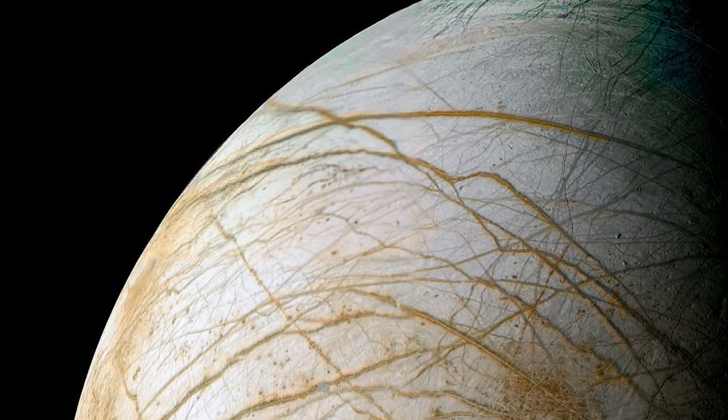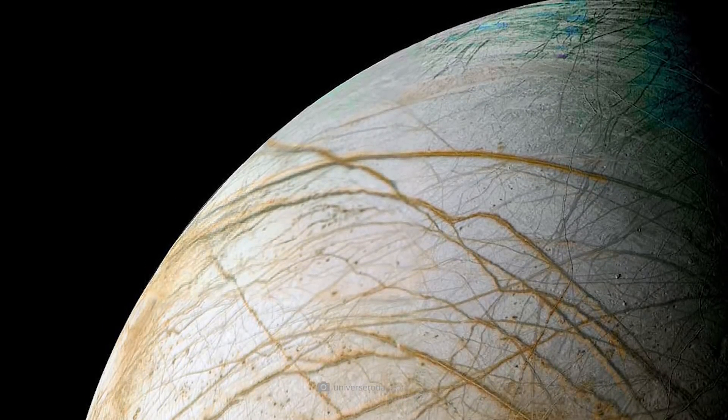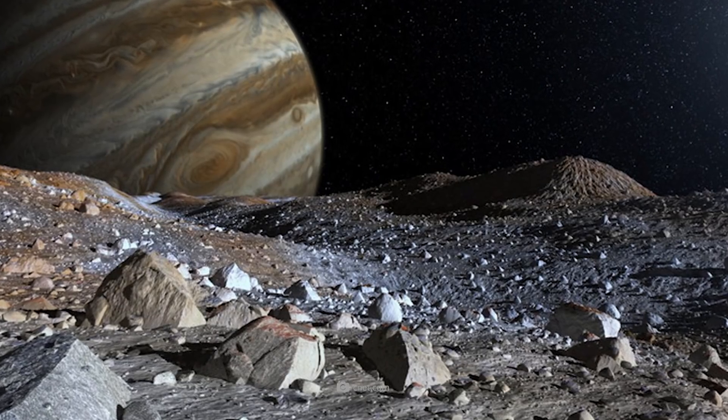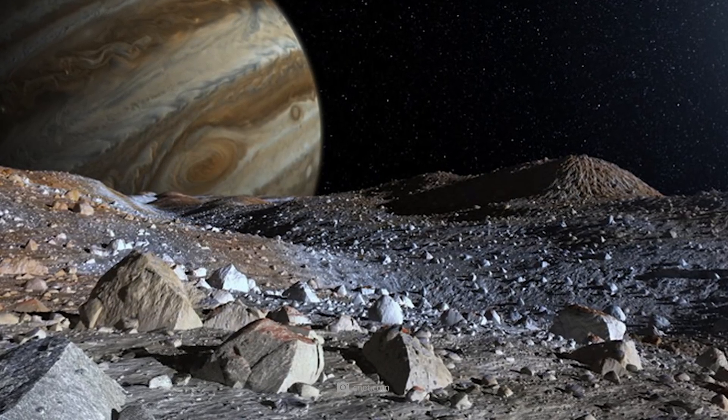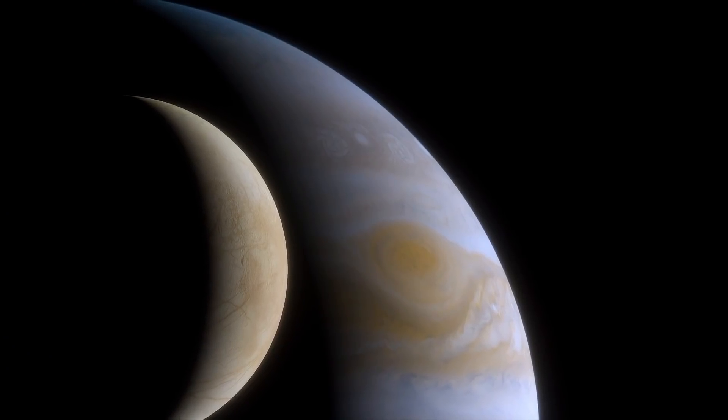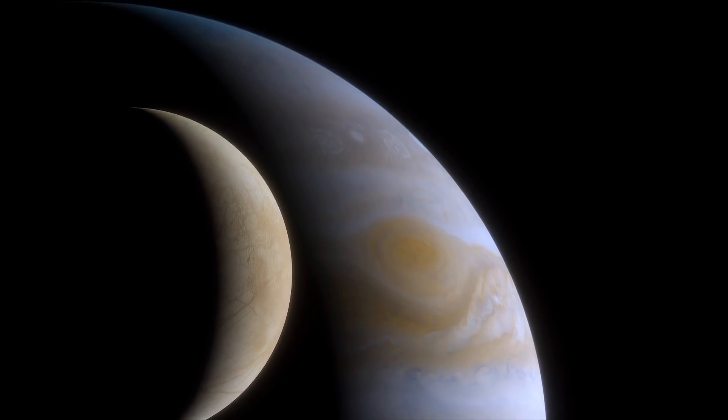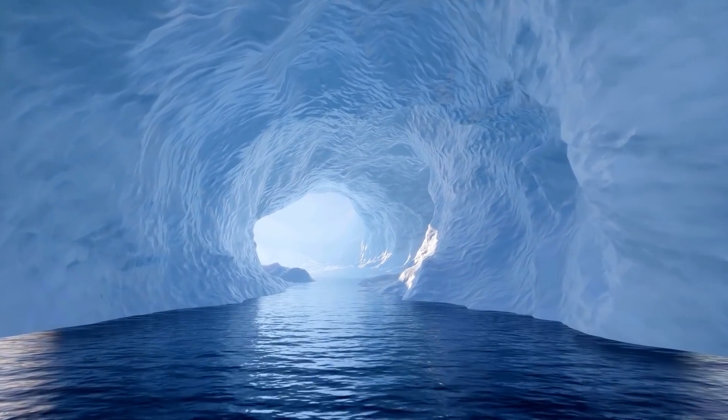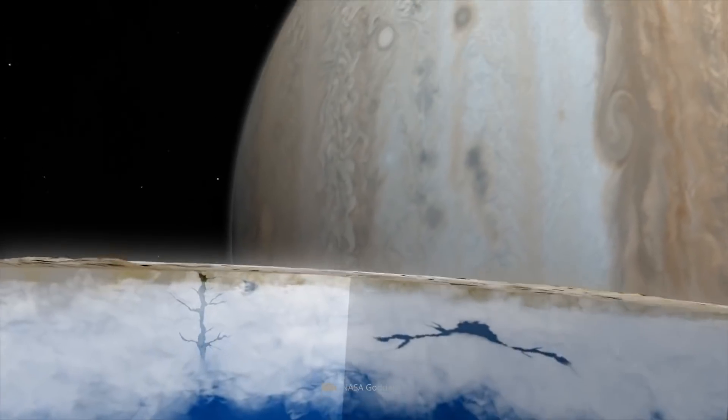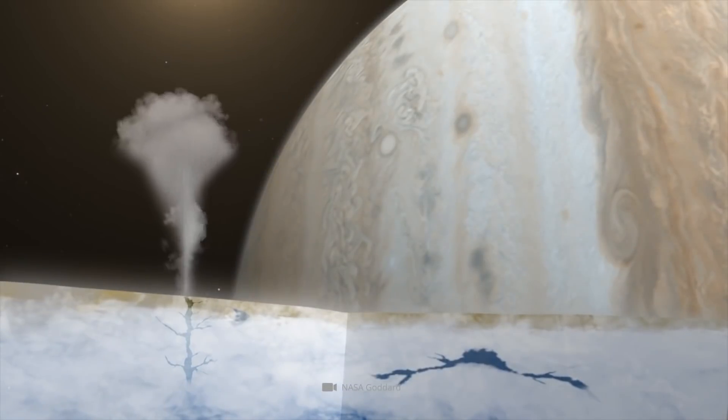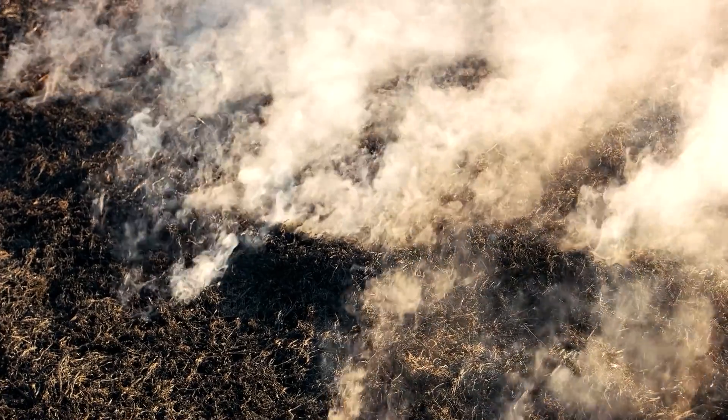For example, areas on Europa's surface have already been discovered that were covered with concentrated sulfuric acid and hydrogen peroxide. In fact, some researchers believe that these corrosive substances originate directly from the subglacial ocean. Accordingly, the ocean in question could have been subject to pronounced volcanism. This could explain, for example, the presence of the sulfur.